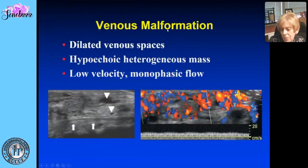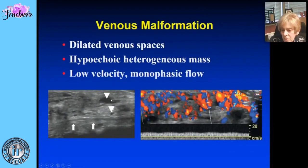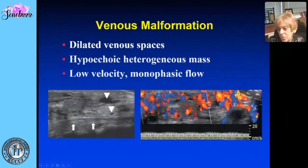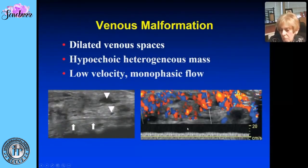The last vascular lesion is the slow-flow venous malformation. You have dilated venous spaces, so on ultrasound you see an infiltrative mass in the soft tissues with hypoechoic spaces. Color Doppler shows it is vascular with all venous, non-pulsatile, slow flow — typical of venous flow. This lesion can increase over time, and depending on its size, embolization may be needed.